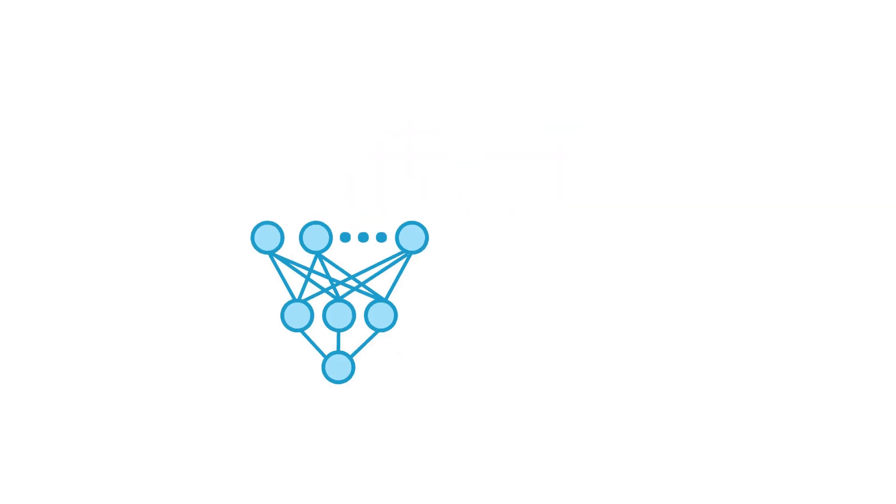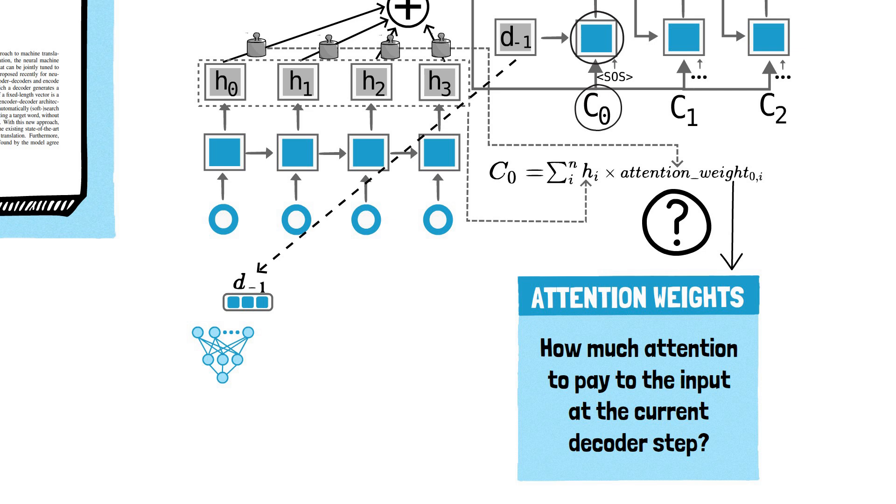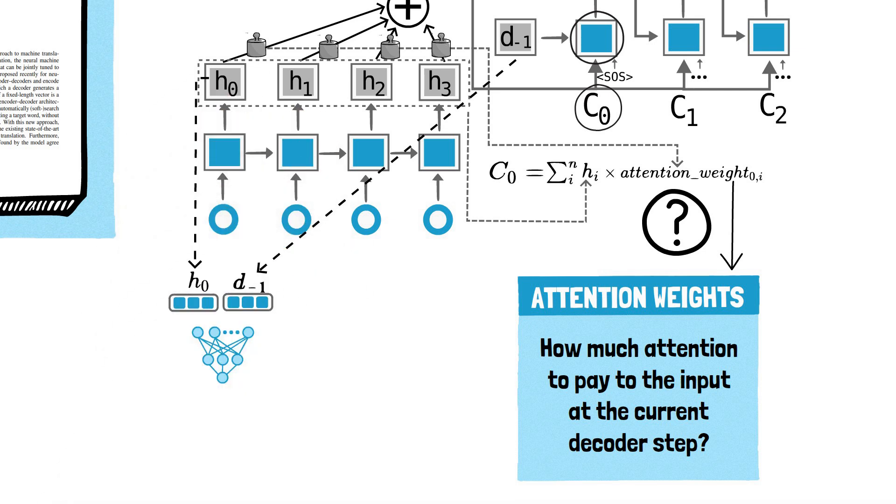This MLP takes as input the current hidden state of the decoder and the hidden state of the encoder for the ith input word. The output of this MLP is an attention weight or score reflecting how closely the input word relates to the current word being decoded. These weights are then computed for all of the encoder states, creating a set of values that represent the relevance of each part of the input sequence to the word being translated.